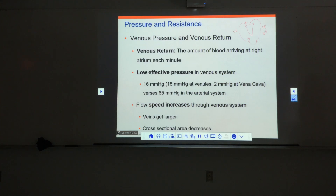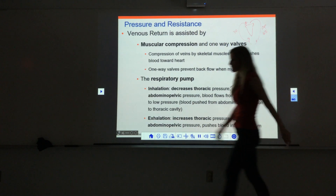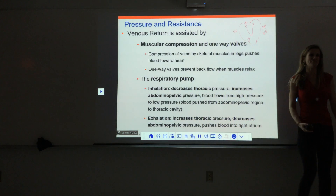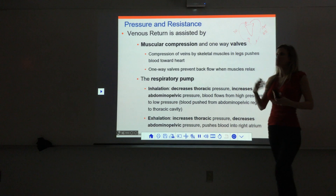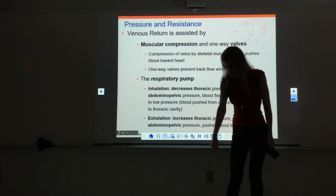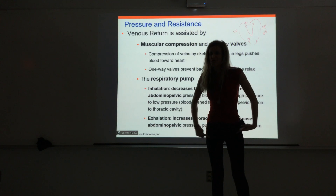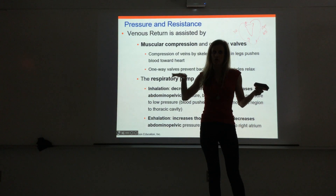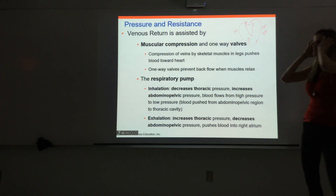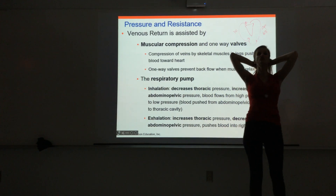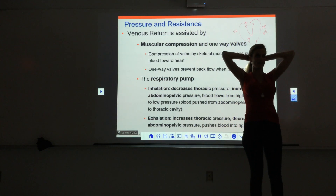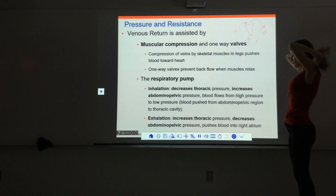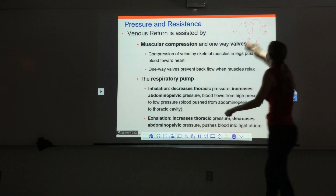With such a low effective pressure, how do we get the blood back to the heart? This is really quite an amazing feat — very low pressure and we're bringing blood all the way from the big toe, up through the entire body, against gravity most of the time, and back into the heart with barely any pressure pushing it forward. We have two different mechanisms to help increase venous return. The first is muscular compression and one-way valves present in the deep veins of our legs.